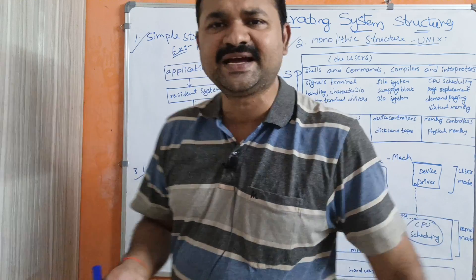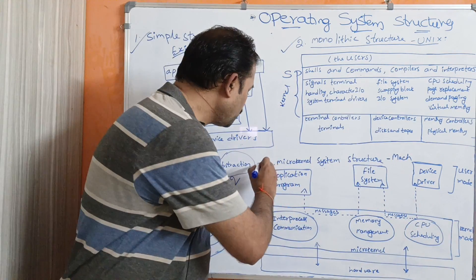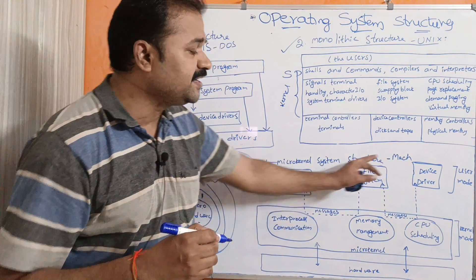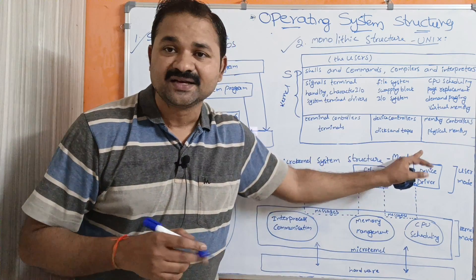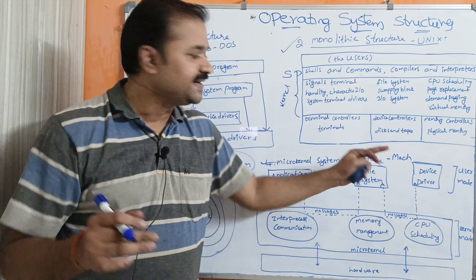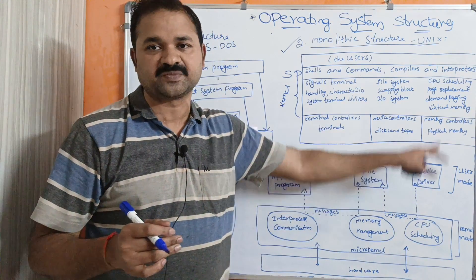The major disadvantage of the layered approach is that it is very difficult to design all these layers, because there are too many layers and designing them is complex. The fourth structure is microkernel. The best example is MACH — spelled M-A-C-H — operating system, which is different from Apple MAC spelled M-A-C.